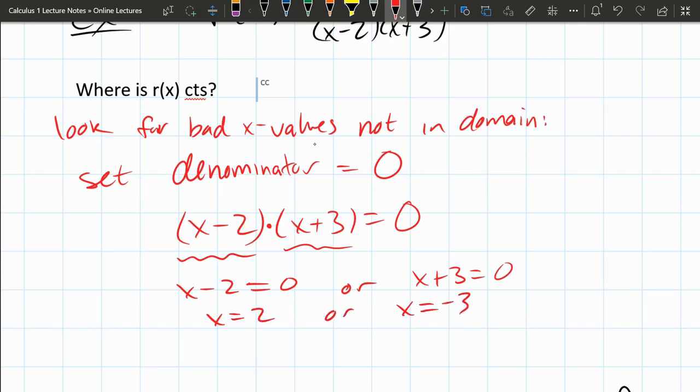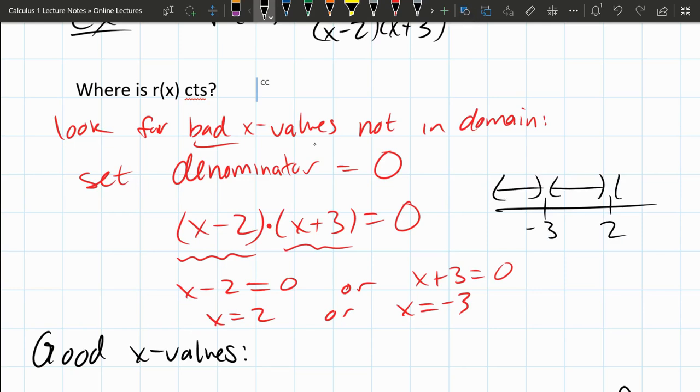Now again, we were looking for the bad x values. So the good x values are any x values that are not these. Take out negative three, take out positive two, and there's three intervals here.